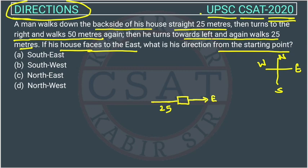He walked 25 meters and then turns to the right. Since he was facing west, turning right means he is now facing north. He then walks 50 meters in that direction.